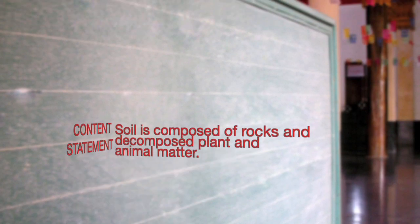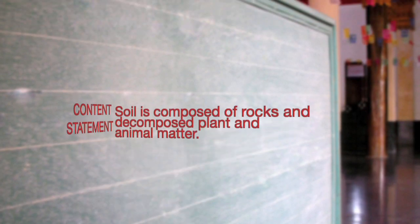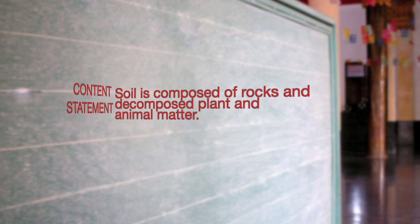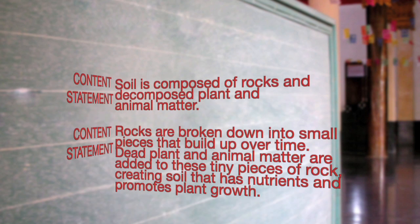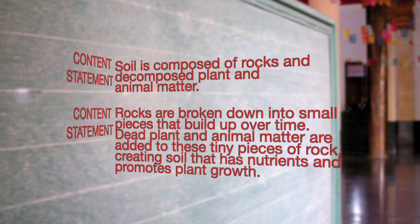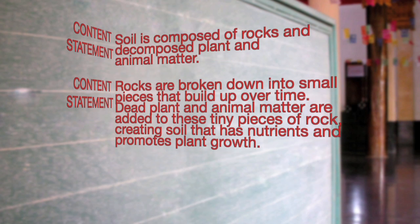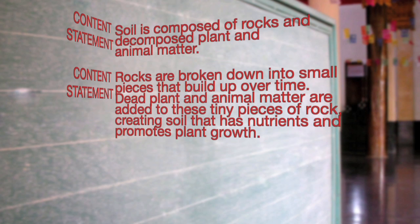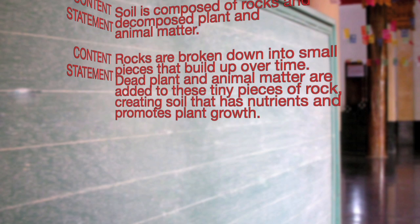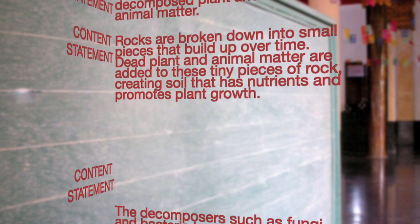Soil is composed of rocks and decomposed plant and animal matter. Rocks are broken down into small pieces that build up over time. Dead plant and animal matter are added to these tiny pieces of rock, creating soil that has nutrients and promotes plant growth.